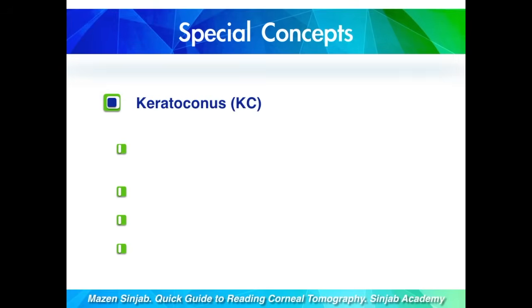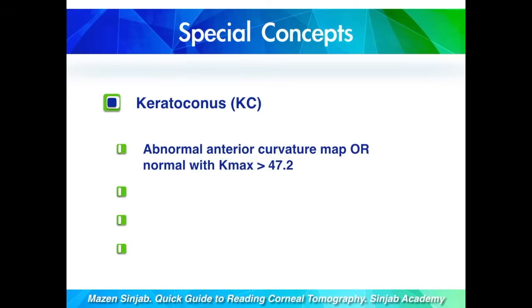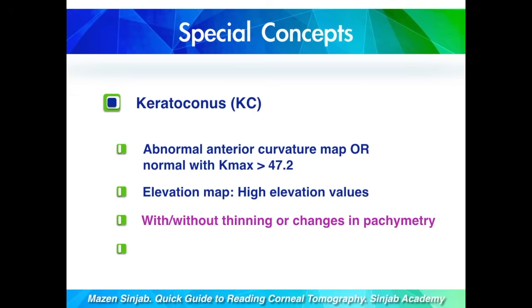Starting with keratoconus. To say that the patient has keratoconus, he should have an abnormal anterior curvature map, or the anterior curvature map is normal but with Kmax above the cut-off point. The patient should also have abnormal high elevation values, especially on the posterior elevation map, with or without thinning or changes in the pachymetry, and the patient should show scissoring reflex during retinoscopy.